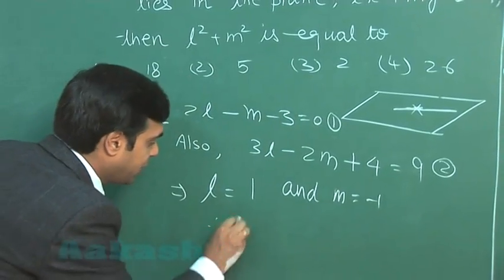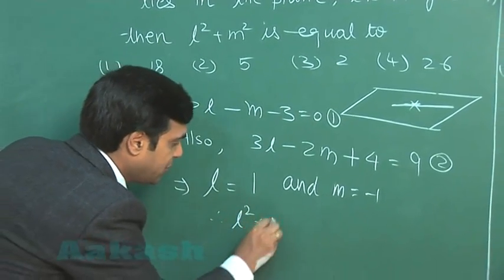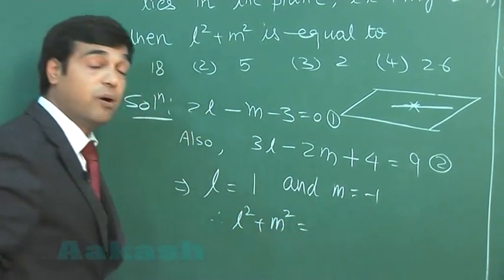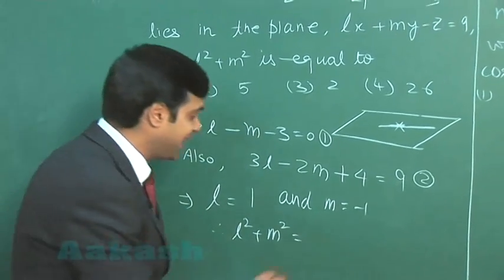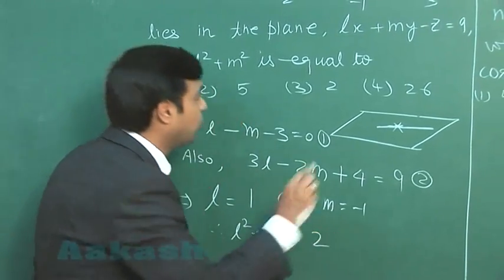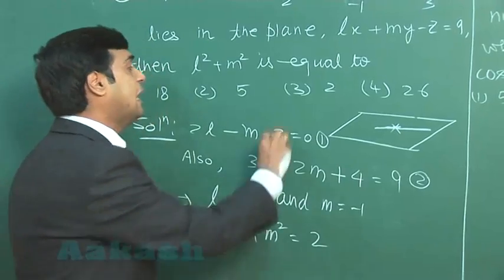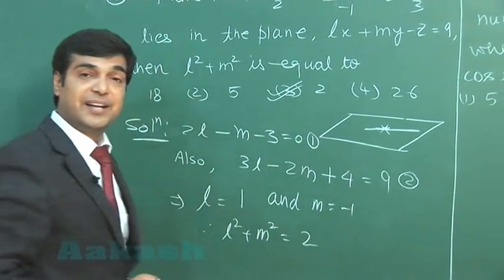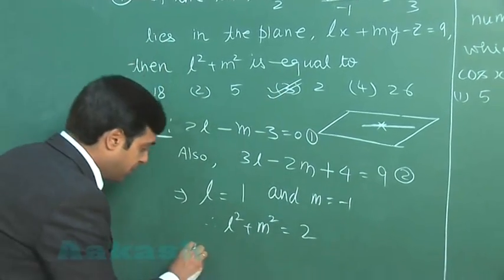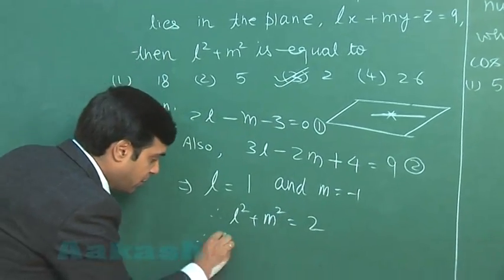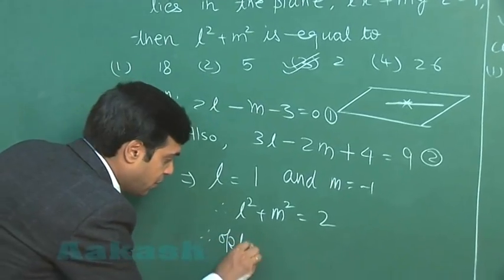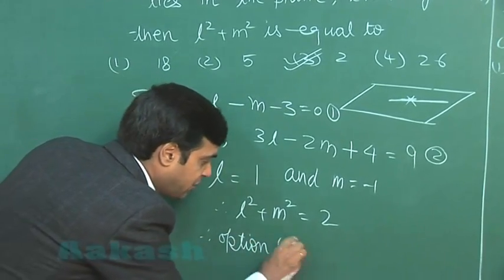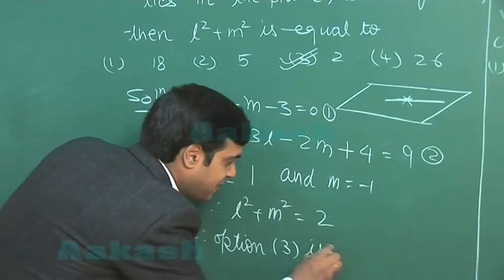Therefore, l² plus m² equals 1 plus 1 equals 2. Option number 3 is the correct answer.